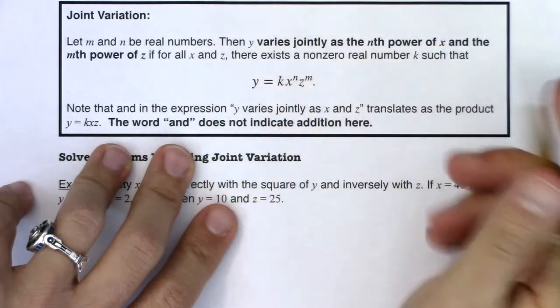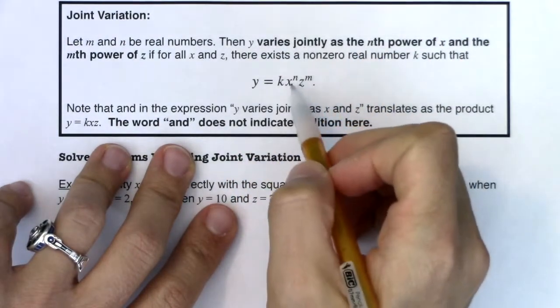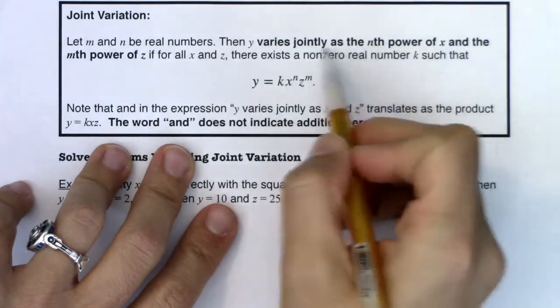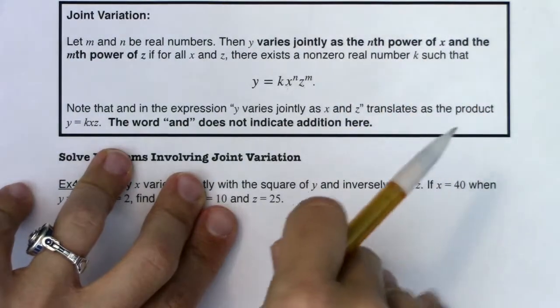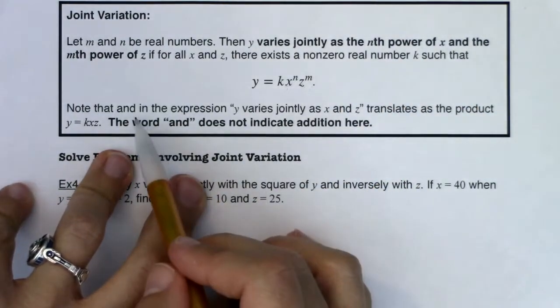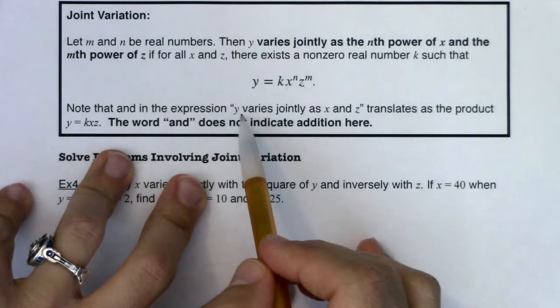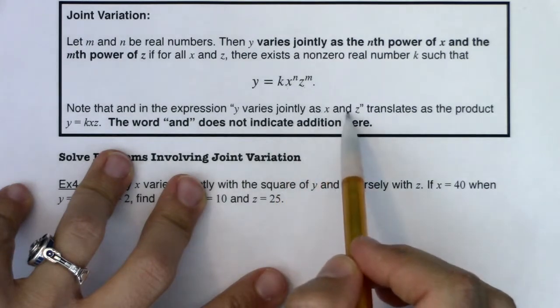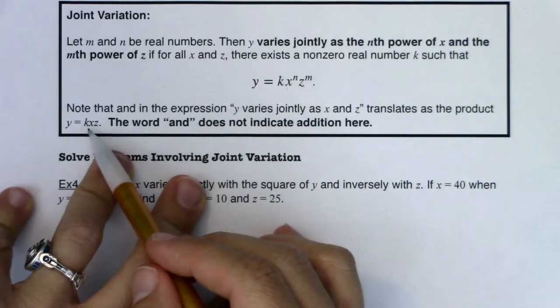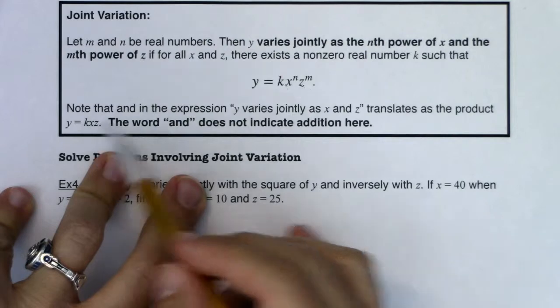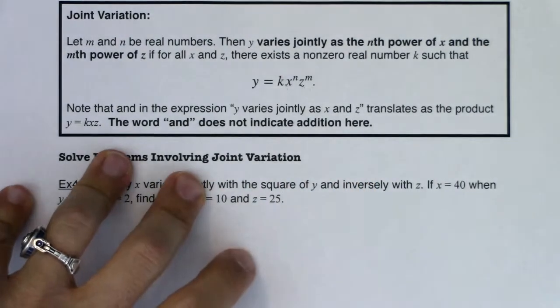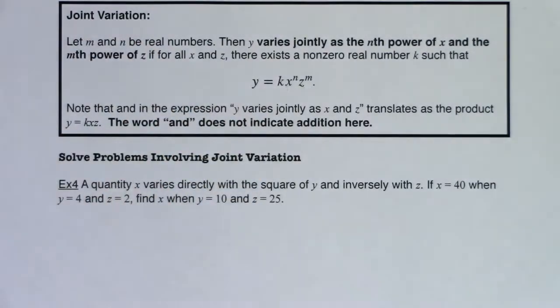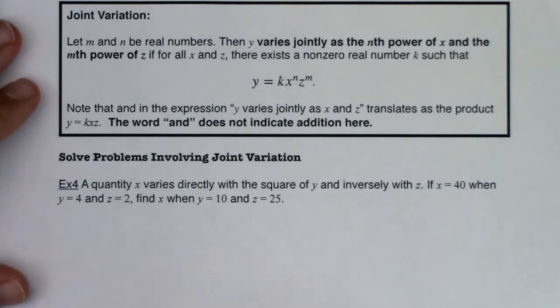And for this particular equation, I gave you direct variation. If it doesn't specify inverse, you can assume they're both direct. But we will start combining them even as soon as example four. So I just want to take note that in the expression Y varies jointly as X and Z, it translates to the product of Y equaling KXZ. The word and does not indicate addition here. I don't want you to think it indicates addition. It's just talking about two quantities varying directly on Y.